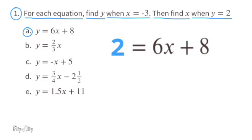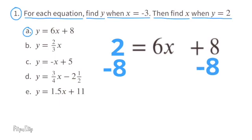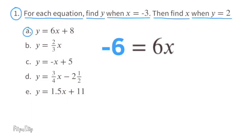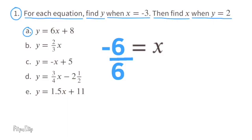It reads 2 equals 6x plus 8. I need to subtract 8 from both sides. 2 minus 8 is negative 6, so now it reads negative 6 equals 6x. I need to divide both sides by 6. Negative 6 divided by 6 is negative 1, so x equals negative 1 when y equals 2.